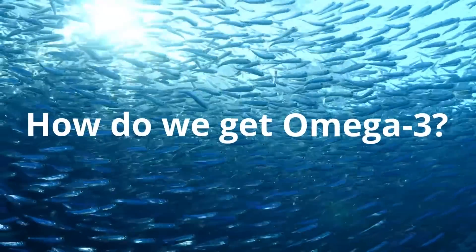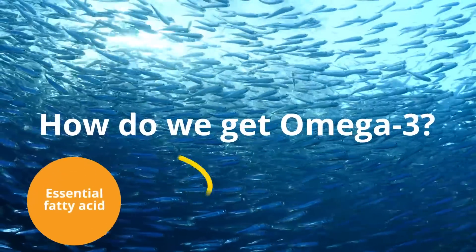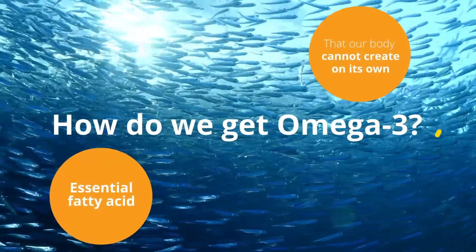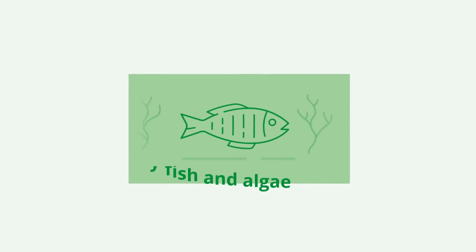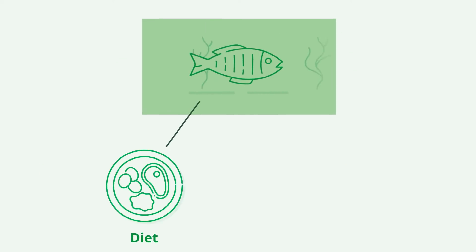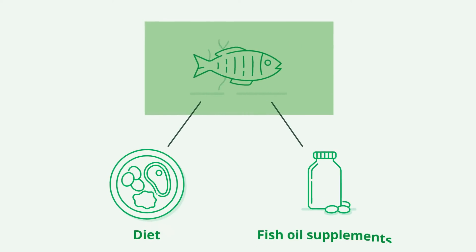How do we get omega-3? Omega-3 is an essential fatty acid that our body cannot create on its own. It's most naturally formed in the tissue of oily fish and algae. We need to get our omega-3s from the food we eat or by taking supplements with fish oil.